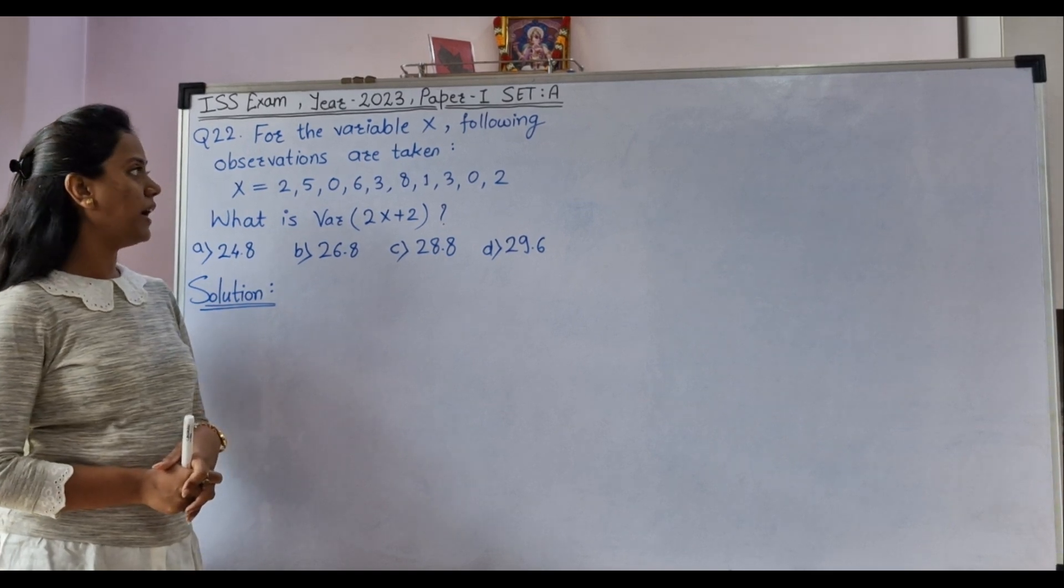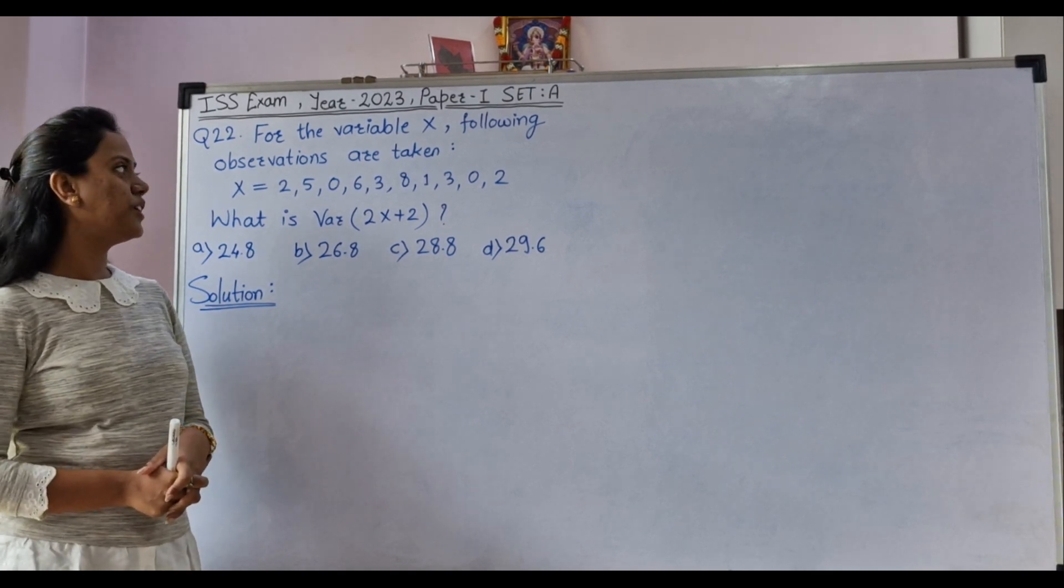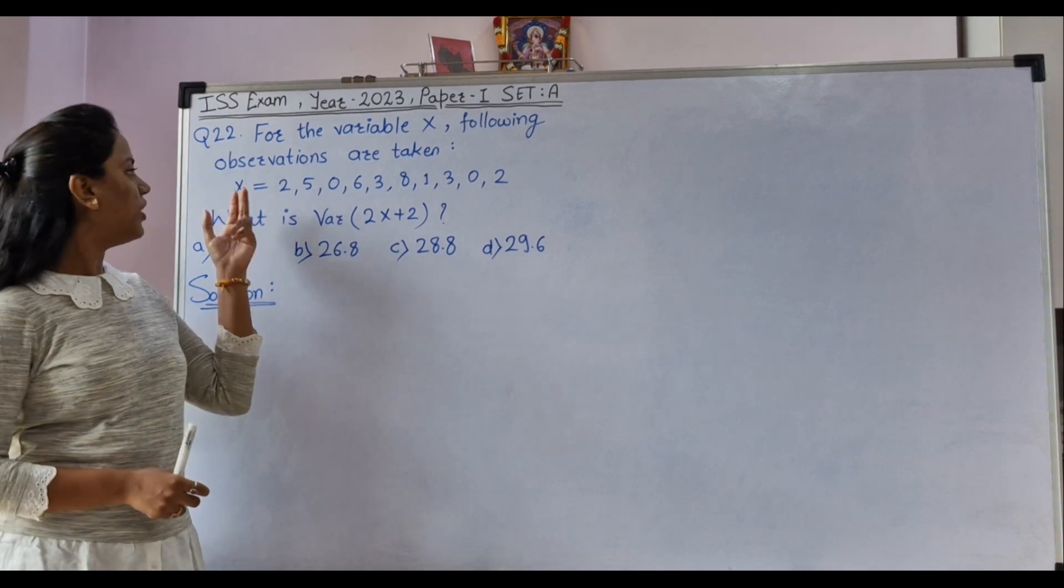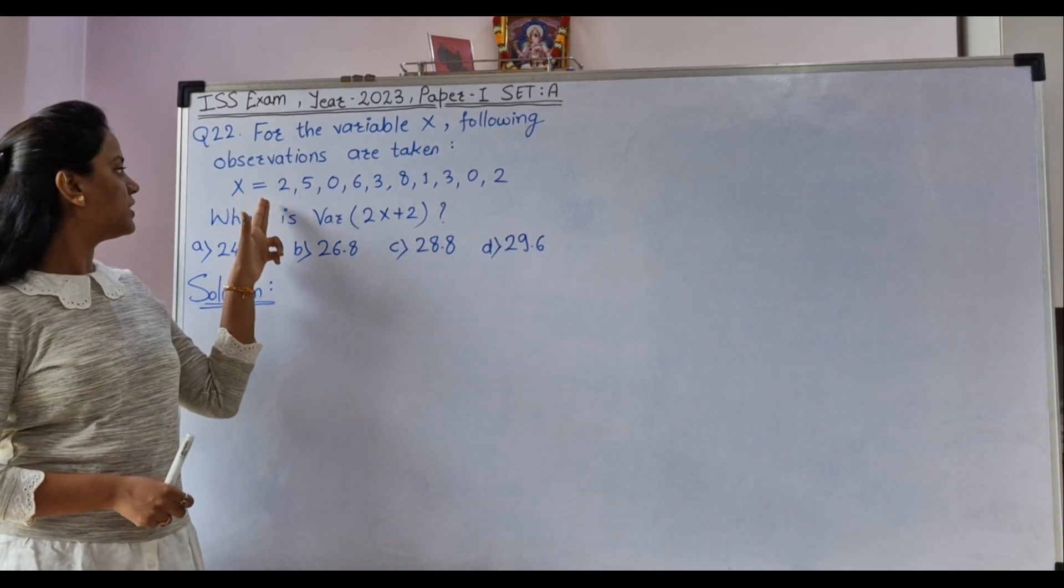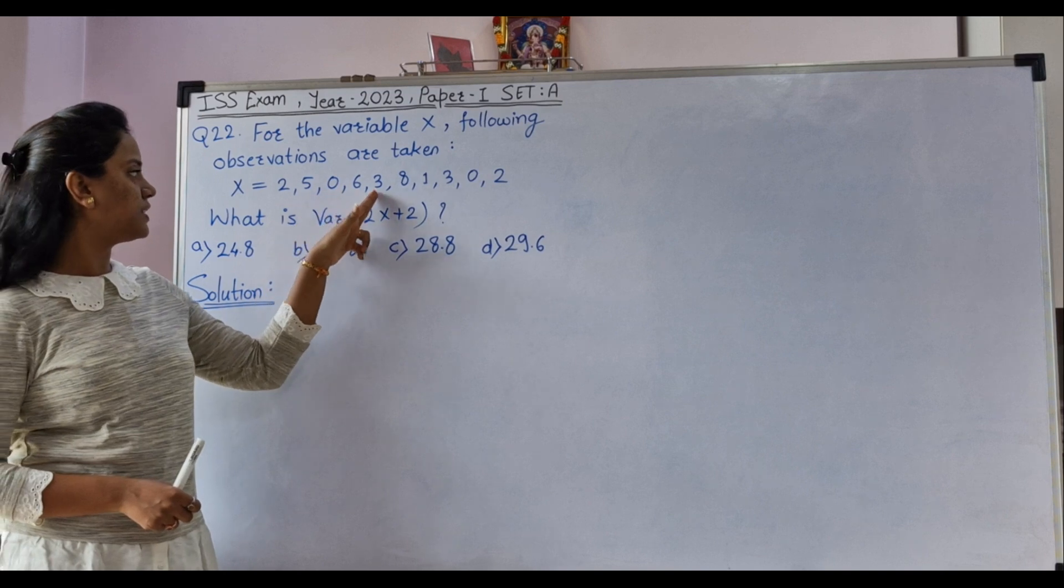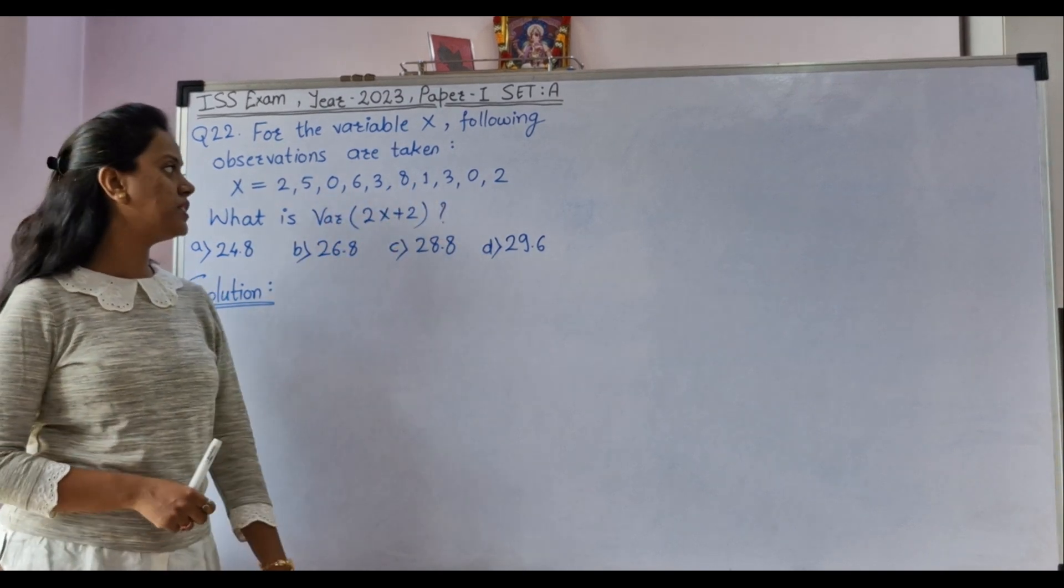For the variable X, following observations are taken. Values of X are given: X equals to 2, 5, 6, 3, 8, 1, 3, 0, 2.